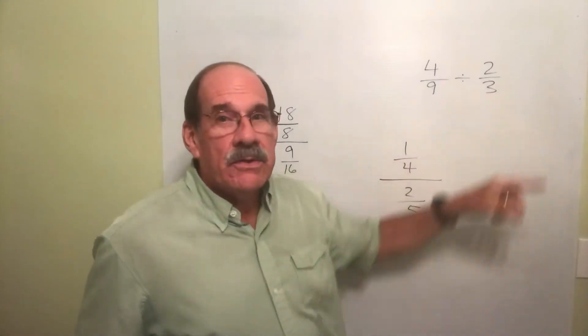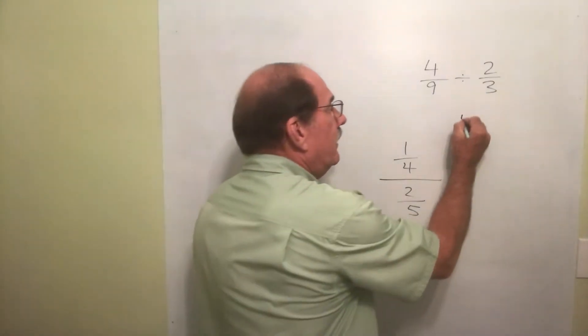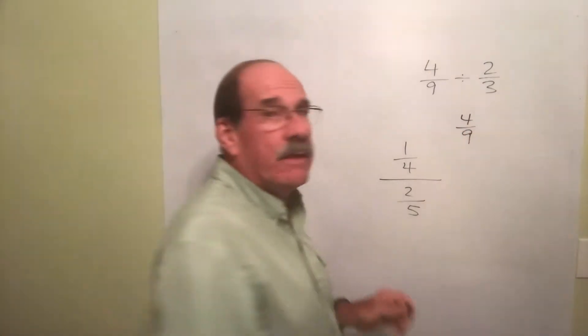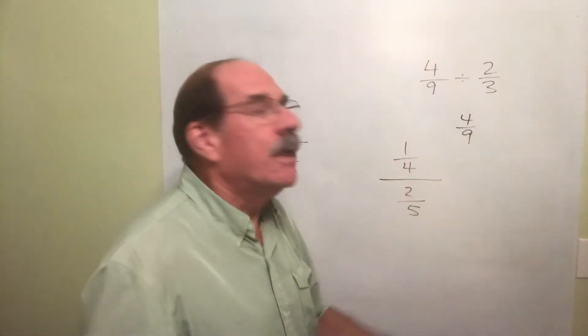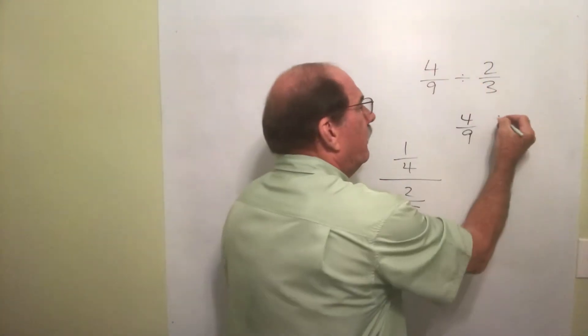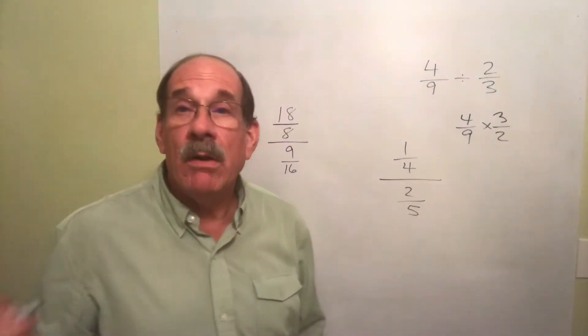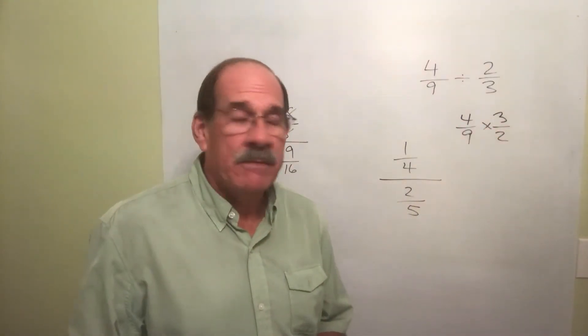Four ninths divided by two thirds. The first number, you leave it alone. Just write it down here. Four ninths. The second number, the one on the right, you flip it over. It has a two on the top and three on the bottom. You flip it over. You put the three here, the two here, but you end up multiplying. That's a nice thing. You multiply.